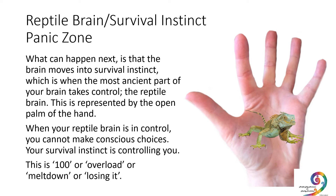What can happen next is that the brain moves into survival instinct. Your thumb will flick open, and that's when the most ancient part of your brain takes control: the reptile brain, represented by the open palm of the hand. When your reptile brain is in control, you can't make conscious choices and you can't control your behaviour. Your survival instinct is controlling you. This is when we talk about zero to a hundred — this is a hundred. This is when you feel overloaded or overwhelmed, sometimes described as meltdown, or losing it, losing the plot.